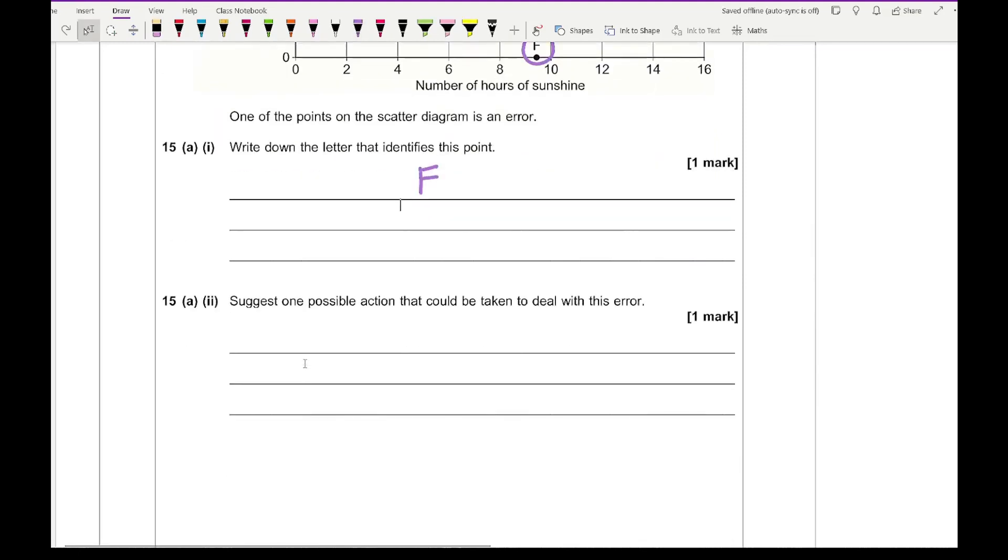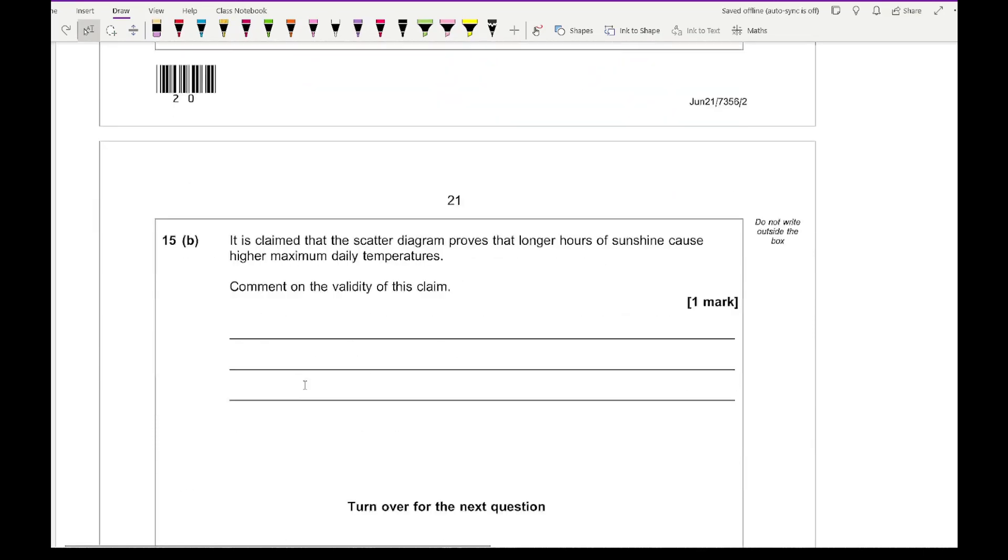It then says suggest one possible action that could be taken to deal with this error. Basically, what you want to say is that you want to remove this point from the data set. So something along those lines of basically removing it, taking it out, assassinating it - it's entirely up to you. Maybe not use that last one.